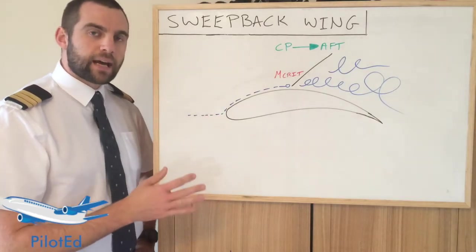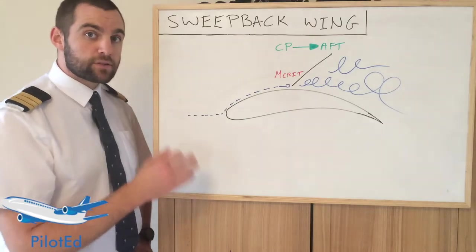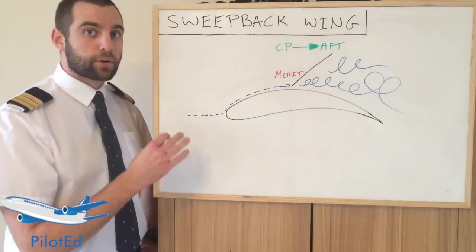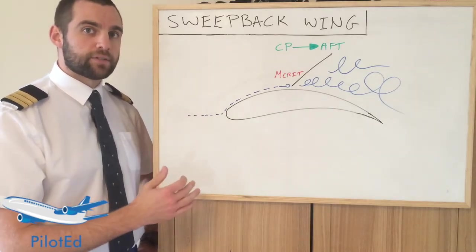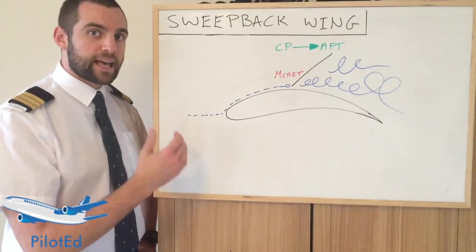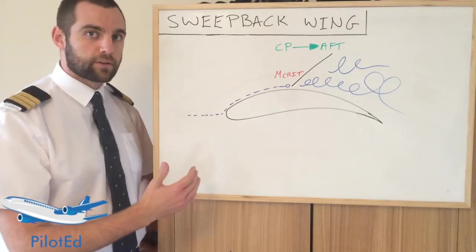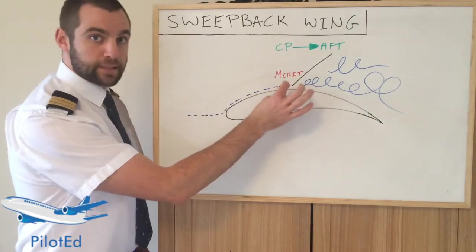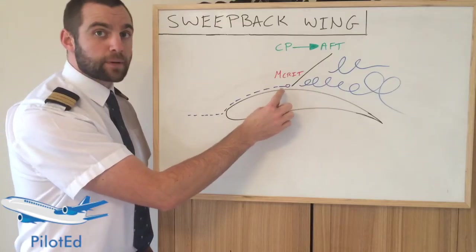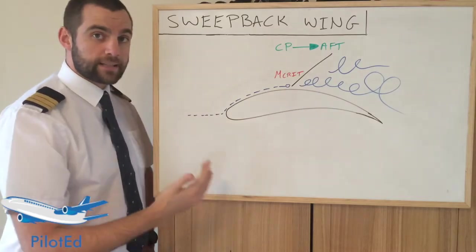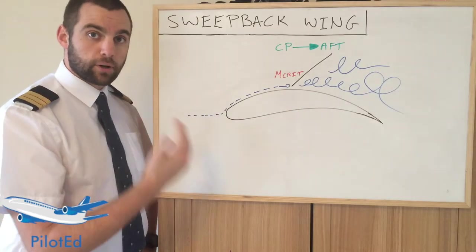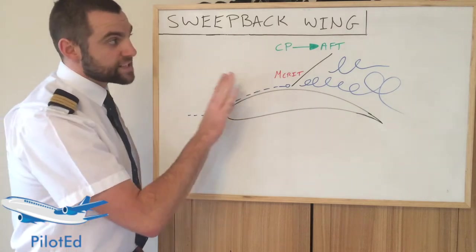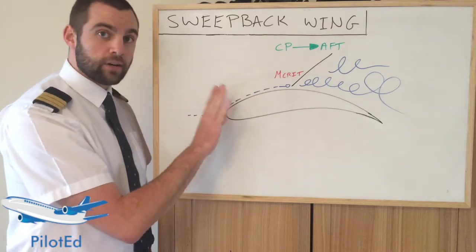The speed at which an aircraft generates supersonic flow over any part of the aircraft is called Mcrit. It doesn't necessarily mean the aircraft is traveling at supersonic speeds — it means airflow over a certain part of the aircraft is traveling at supersonic speeds. At that point the airflow becomes supersonic, which generates a shock wave, generates a lot of problems, disturbed airflow, and the biggest problem is it moves the center of pressure aft.